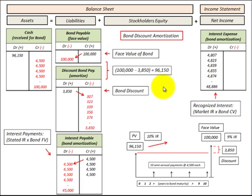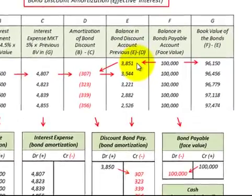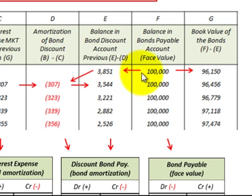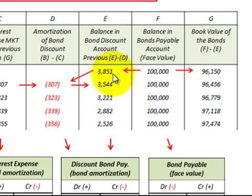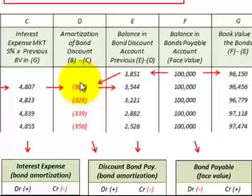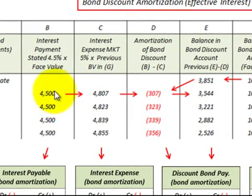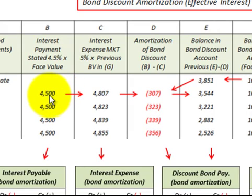So now we'll look at how we calculate the discount and those interest expenses. We started out with a $100,000 bonds payable face amount, and its present value — what we received — was $96,150. So the discount or balancing entry is $3,850, the difference between the bonds payable and its book value. For the interest payments, based on a 9% stated rate, we take 4.5% times $100,000 for the semiannual payments, giving us $4,500 of interest payments — a steady annuity on that bond.